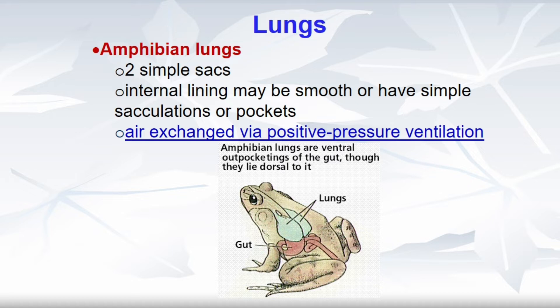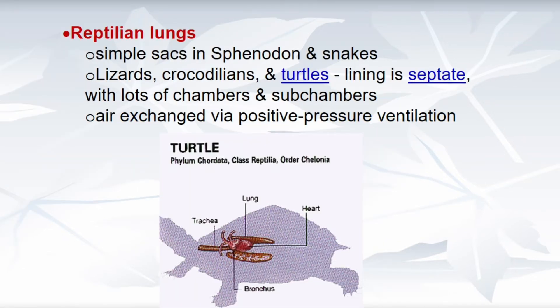In lungfishes, the swim bladder acts as lungs. In amphibians, two lungs are simple hollow sacs with a wide central cavity, suspended freely in the peritoneal body cavity. They are elongated in urodeles but bulbous in anurans. In frogs and toads, the wall of the lungs may be divided peripherally by a network of folds or trabeculae into air sacs or alveoli. They are richly vascularized and lined with mucus epithelium.